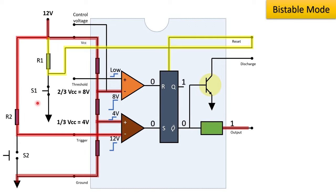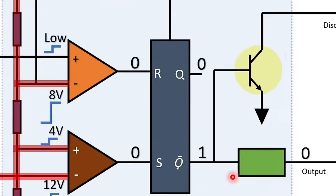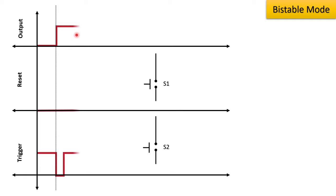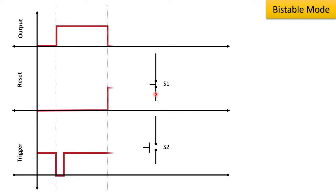When we push switch S1, it activates the reset of the flip-flop and the output goes back to 0 and 1, resulting in the IC555 output going to 0 or low state. In bistable mode of operation, there are two stable states. Pushing S2 causes the output to go high and remain there, while pressing S1 brings the output back to 0.